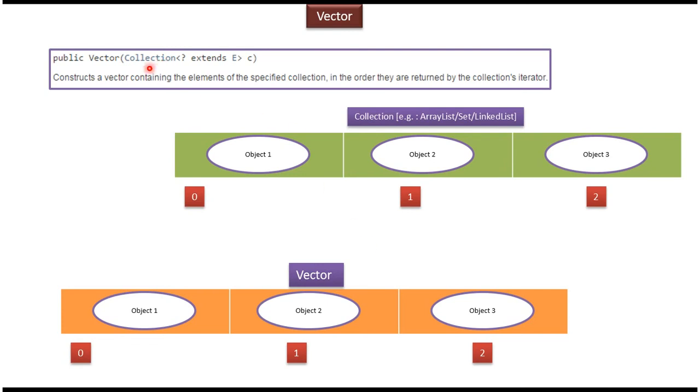And this is the last constructor which accepts a collection. Suppose in the collection there are three objects. The collection can be ArrayList, Set, or LinkedList. If we pass this collection to the vector, the vector will be constructed and whatever elements are present in this collection will be present in the vector. And this is about vector constructors.